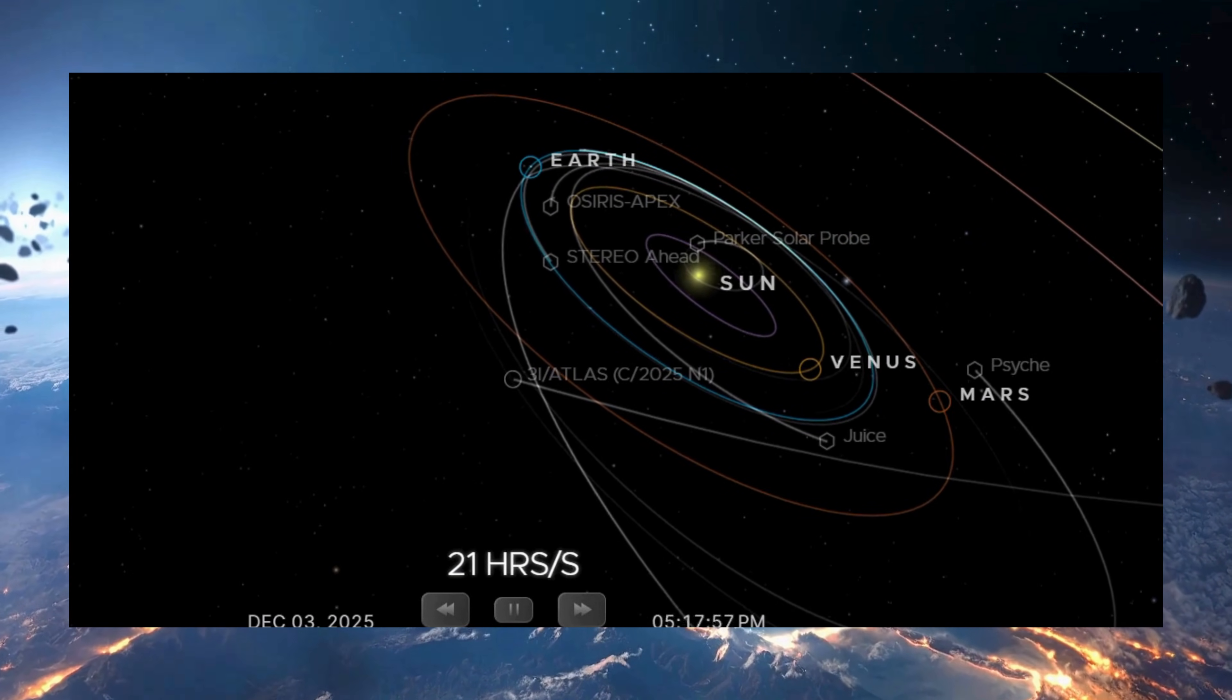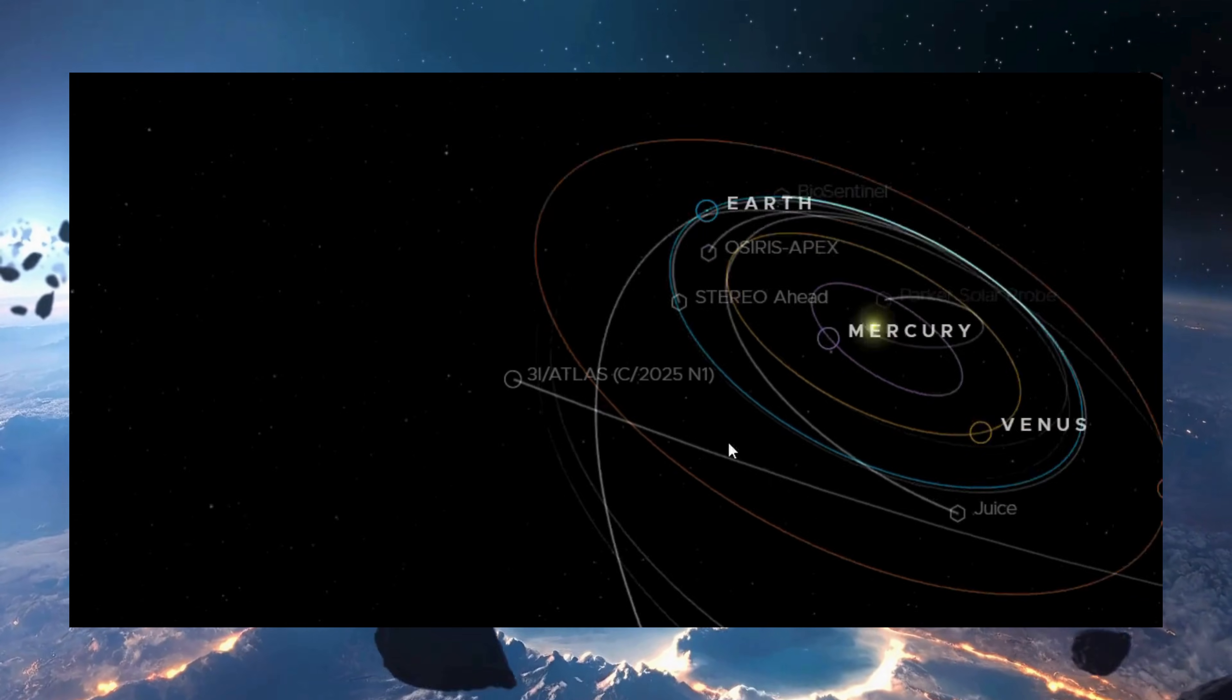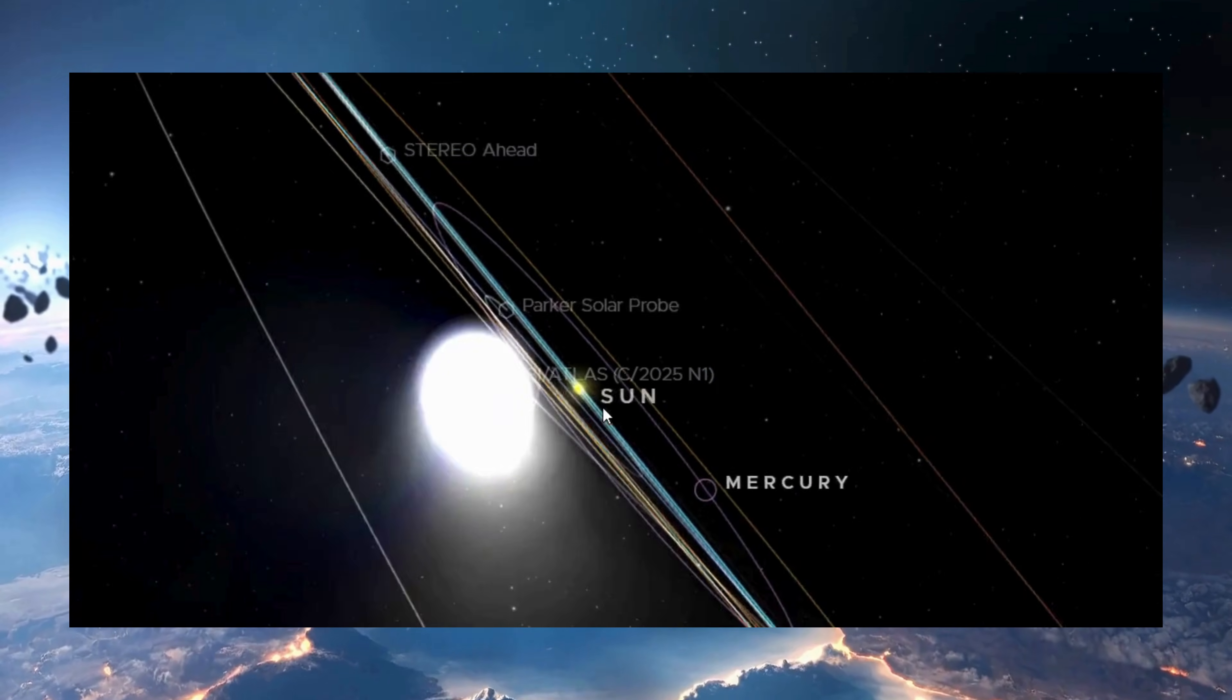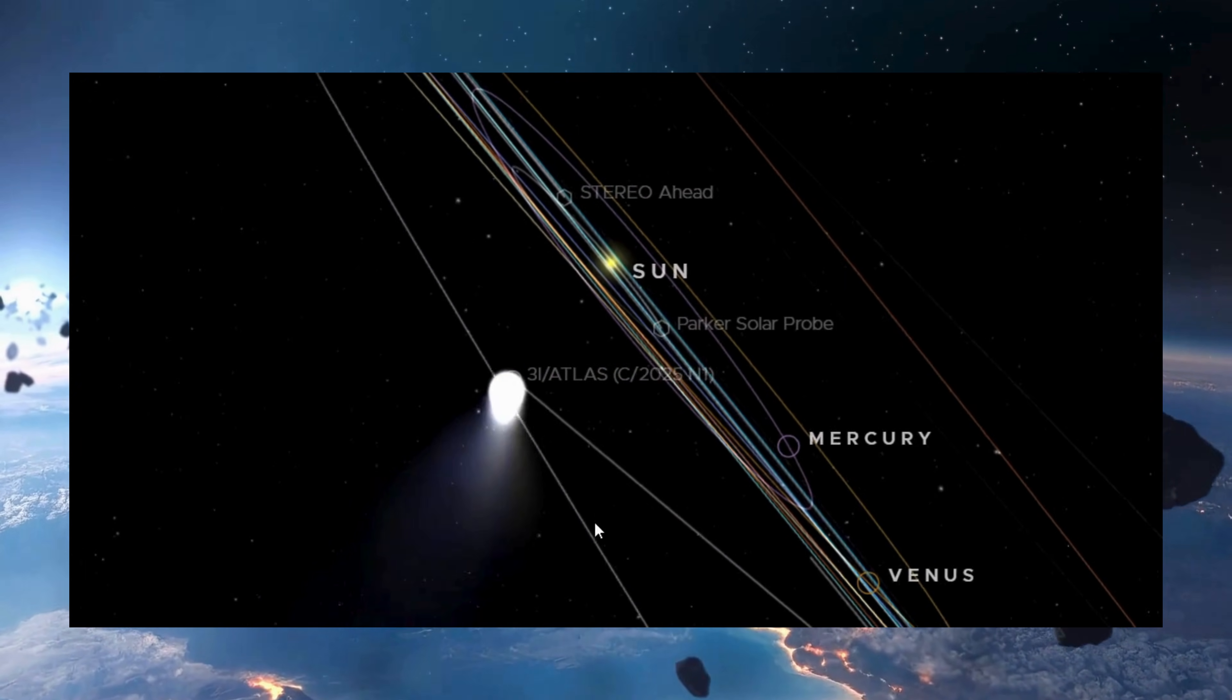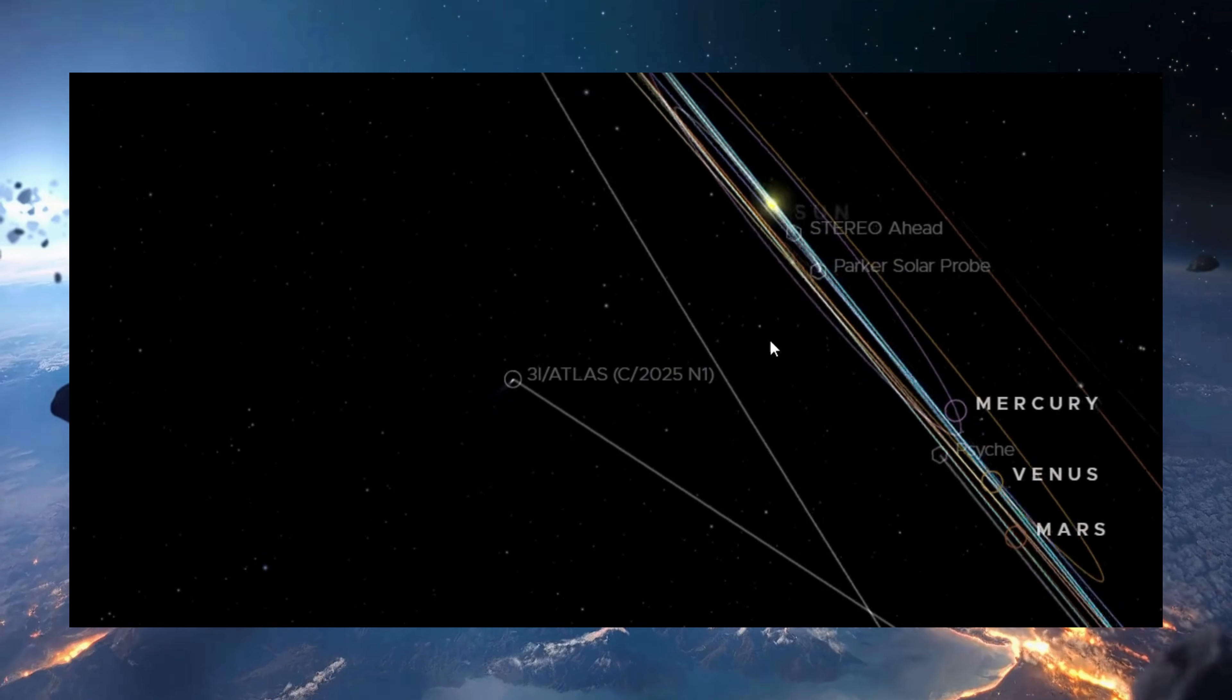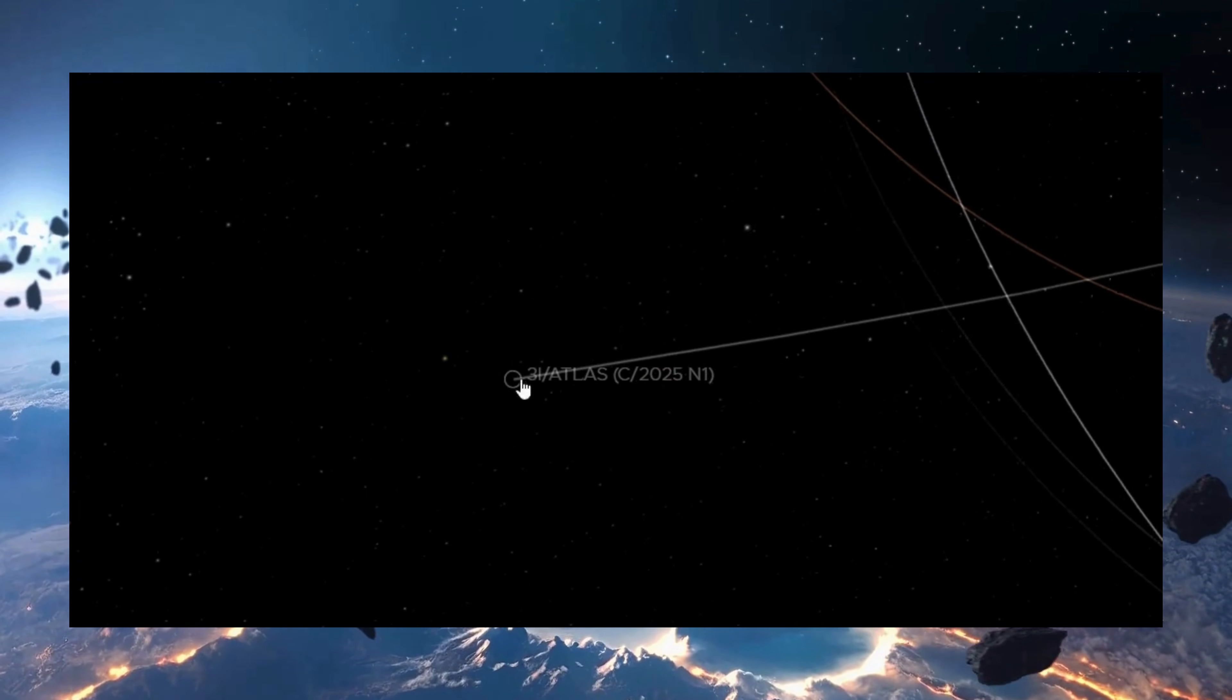Now, it would be easy to assume the signal was just too faint, but that explanation doesn't hold up. The detection threshold during those months was about 300 times more sensitive than the acceleration measured later. In other words, if 3i/ATLAS had been experiencing even a fraction of the recent push, it should have been obvious in the data. But the object moved as if no extra force was acting on it at all. And that changes everything.